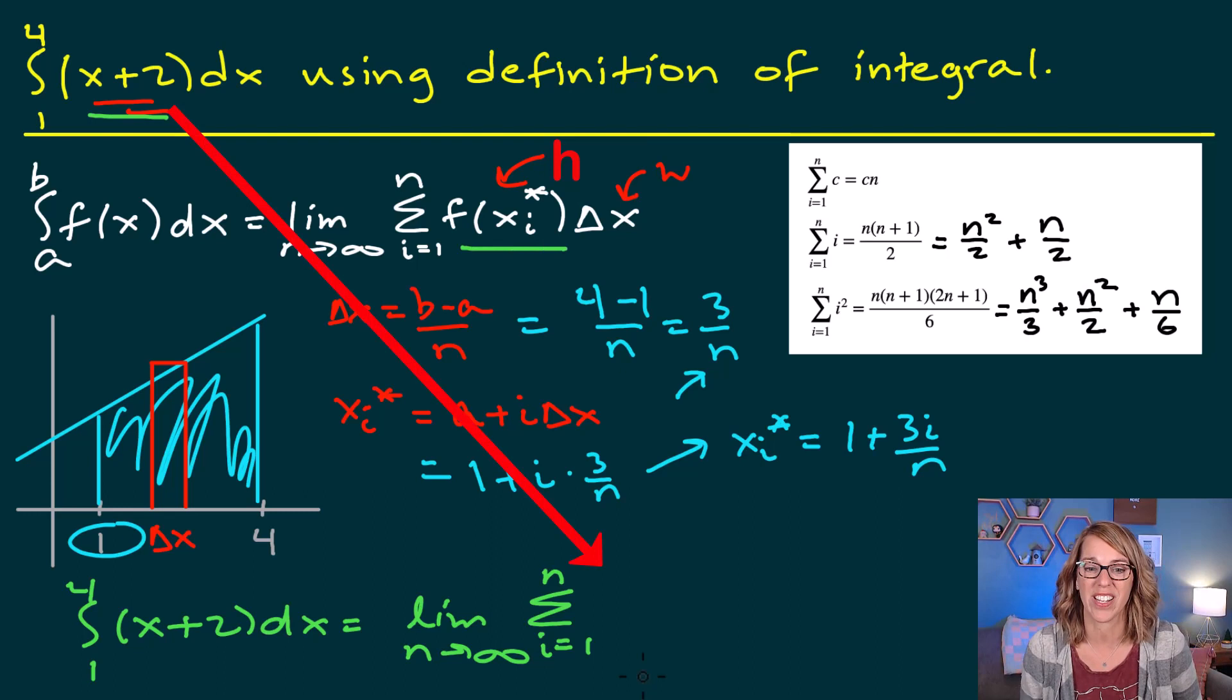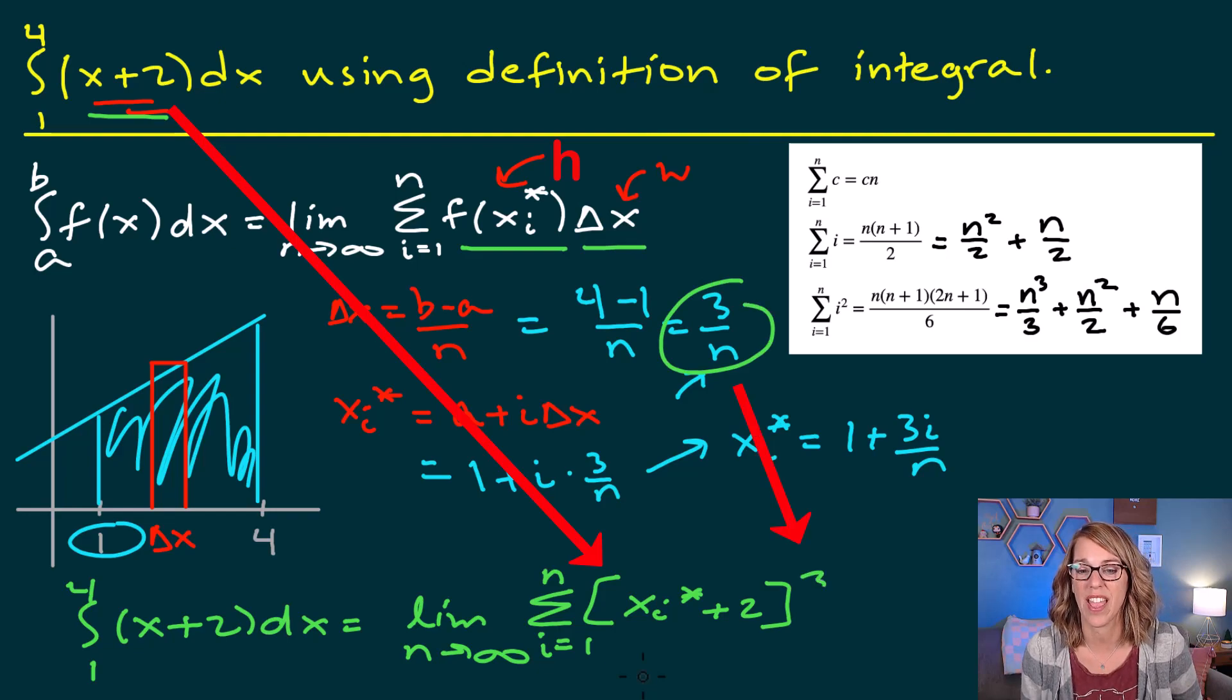F of x sub i, well f of x is my function. So this is going to be x sub i star plus 2. And then my delta x, and delta x is 3 over n.